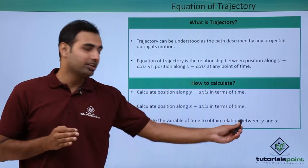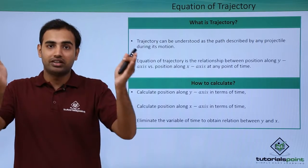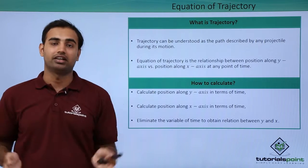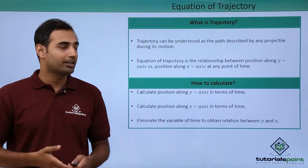And then ultimately we eliminate the variable of time. We eliminate t between these two equations and then we create a relationship between x and y. So that becomes our equation of trajectory. It is a very straightforward method. Now let us see how we exactly do it.